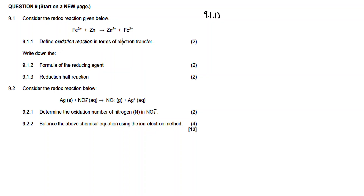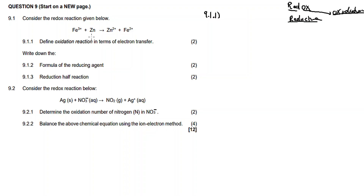Looking at redox: the word 'redox' — 'red' stands for reduction and 'ox' stands for oxidation. A redox reaction involves both a reduction and an oxidation. In terms of electron transfer, one substance will lose electrons and another will gain electrons. For this question we observe the oxidation numbers.